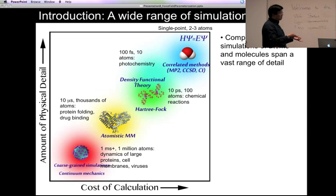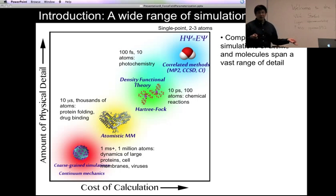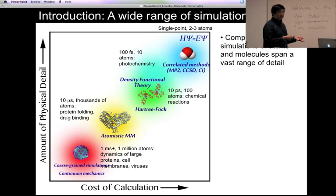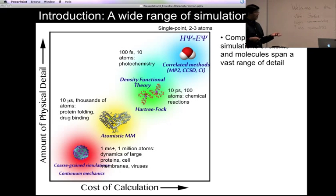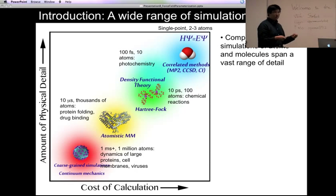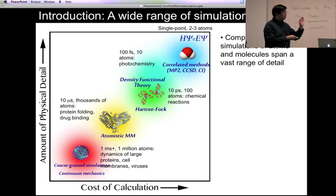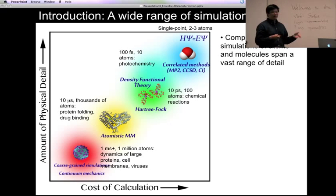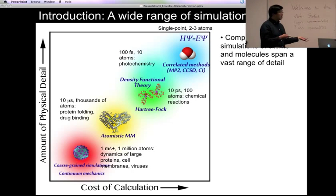You can use a very low level of detail and run what are called coarse-grained simulations, in which the particles in your simulations don't represent atoms at all — they really represent collections of atoms. An entire amino acid can be represented using one particle, and that allows you to simulate entire viruses or even cells, but at a much lower level of detail.